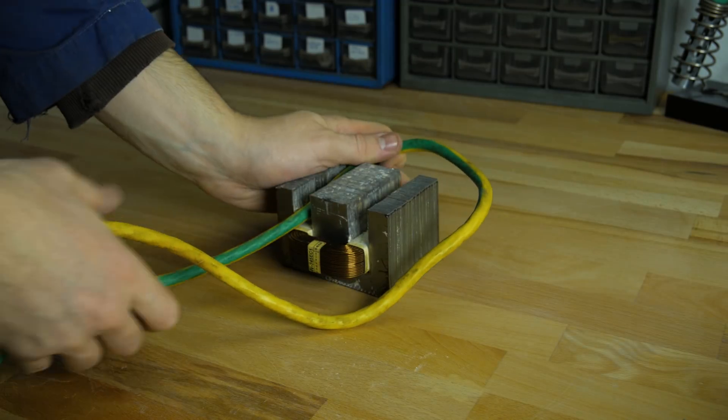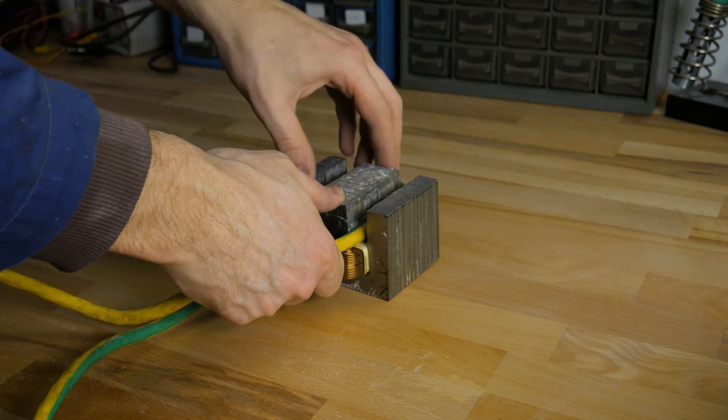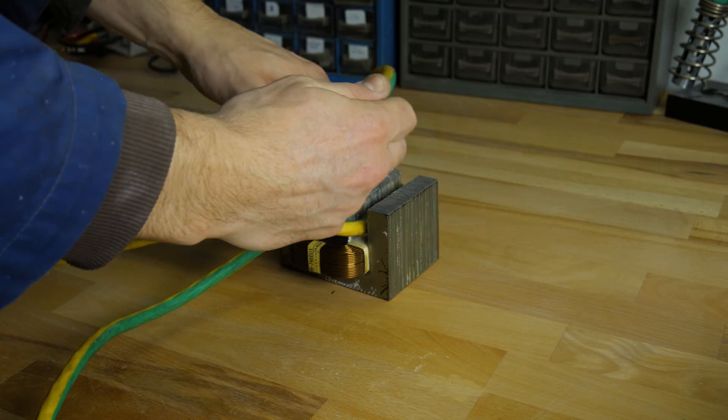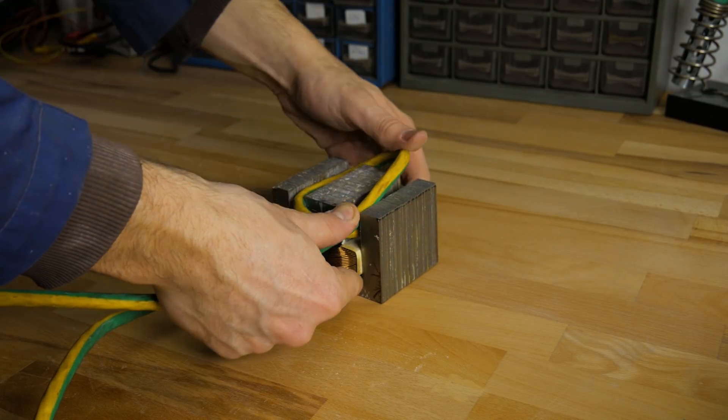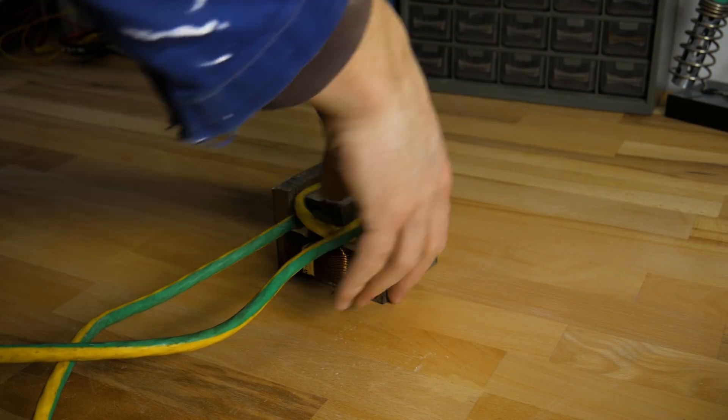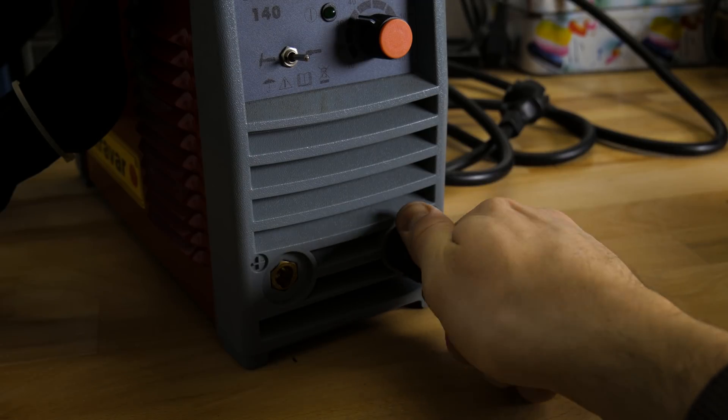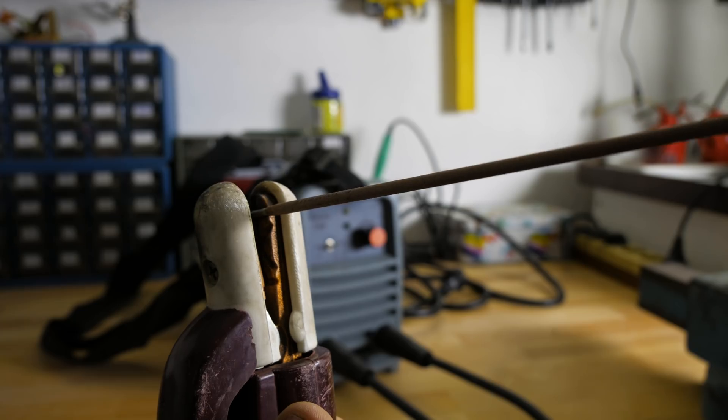Now let's use our thick cable as a new secondary coil but this time we're gonna do just one revolution which gonna lower the output voltage and increase the amperage up to 100 amps. After that I weld the cap back on and we are ready to test it out.